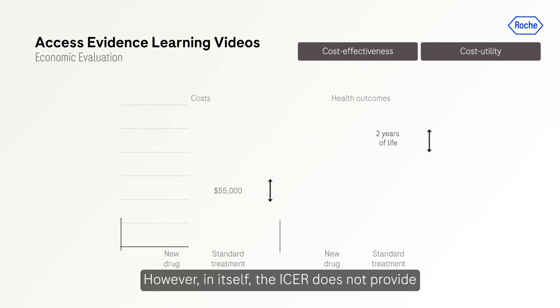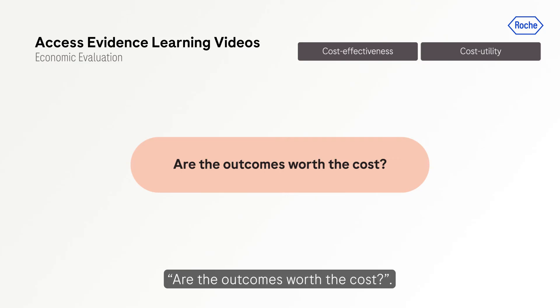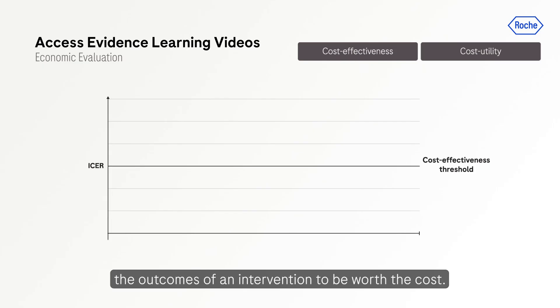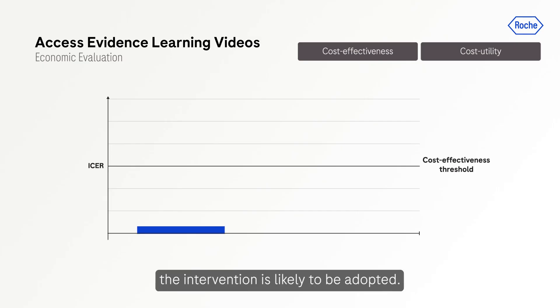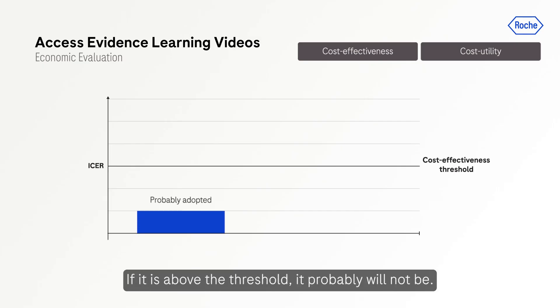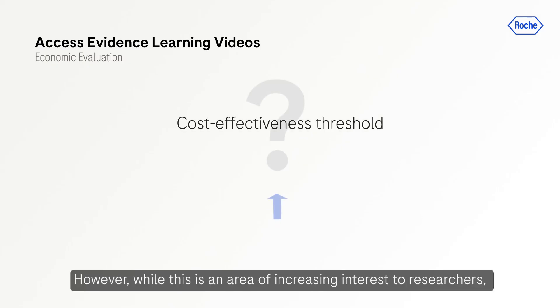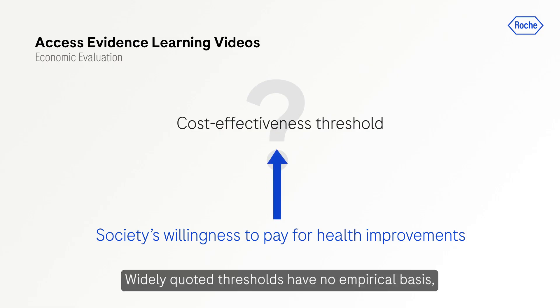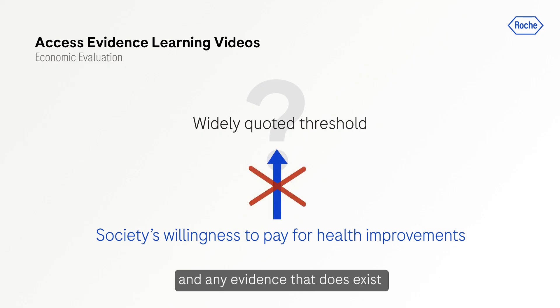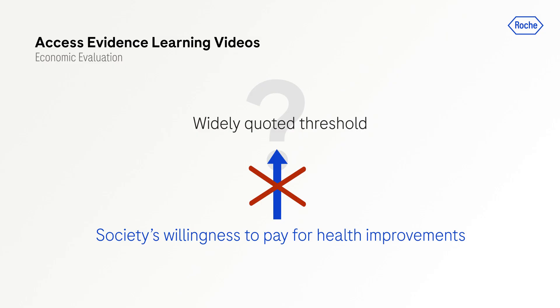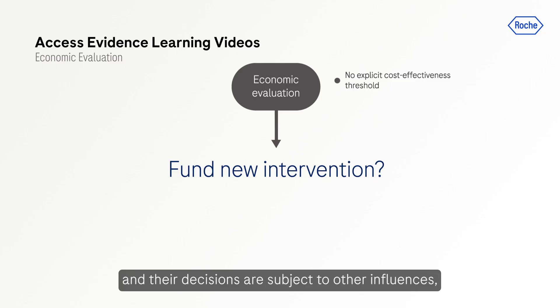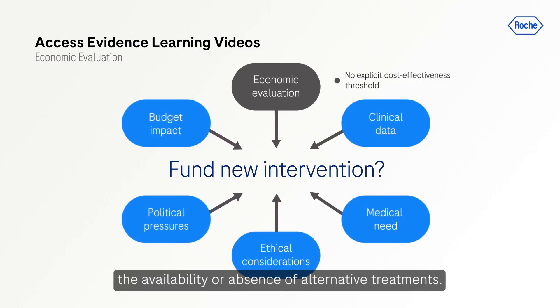However, in itself the ICER does not provide an answer to the question: are the outcomes worth the cost? This depends on the decision maker's cost-effectiveness threshold — the maximum level at which they consider the outcomes of an intervention to be worth the cost. If the ICER for an intervention is below the threshold, the intervention is likely to be adopted; if it is above the threshold, it probably will not be. Cost-effectiveness thresholds should reflect society's willingness to pay for health improvements, but there is no evidence as to what different societies are in fact willing to pay. Widely quoted thresholds have no empirical basis, and any evidence that does exist suggests the figures should be higher. In general, decision-making bodies do not explicitly state a cost-effectiveness threshold, and their decisions are subject to other influences such as the burden of disease and the availability or absence of alternative treatments.